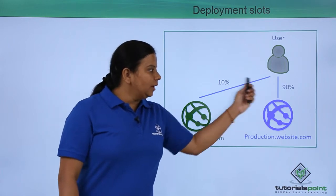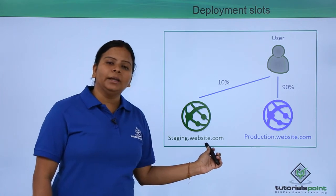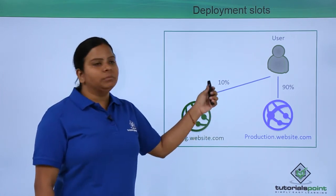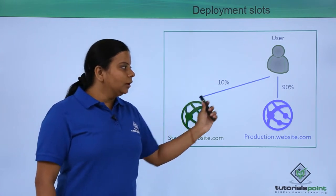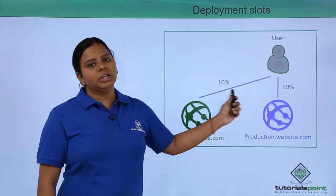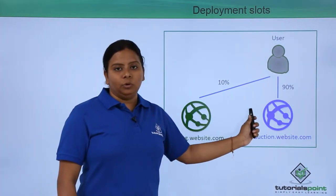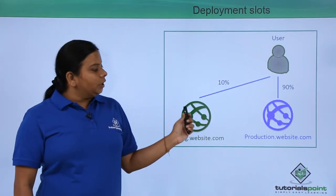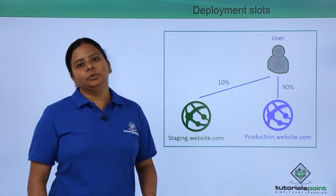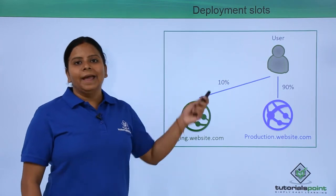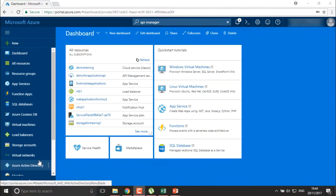You can change this traffic ratio at any time. If you don't want anyone going to the staging slot, you can set it to zero or even delete that deployment slot. Or if you want a 50/50 split, you can change the ratio accordingly. Let's now see how to create deployment slots in Azure and divide the traffic ratio in the portal.